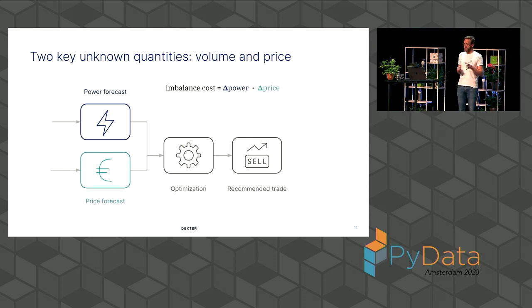So this is Dexter. Let's now talk about the forecast we give, and also related to our example. Recall the formula for imbalance costs. So there are two key unknown quantities, volume and price. And the supplier can leverage power forecasts and price forecasts to get an optimal trading strategy. So recommended trade in this picture here. And let's focus now a bit more on price. And this price forecast captures actually the uncertainty that is in the system. We're now going to zoom into how price forecasts can help balance the grid.